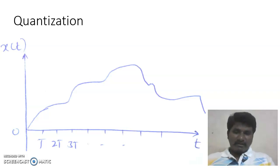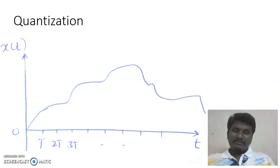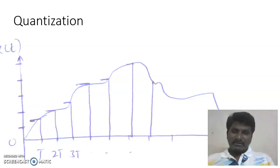In sampling, we take the values of the signal at predetermined defined values of time t. In this example, we are taking the value of the signal at time t equal to T, 2T, 3T, and so on. However, we are not taking discrete values of amplitude. At time t equal to T, whatever value the signal has, that value is recorded.